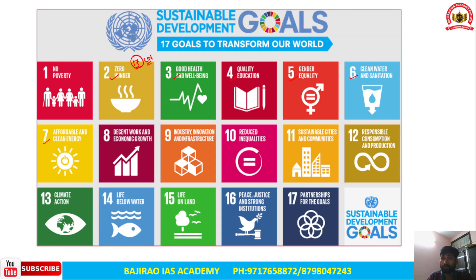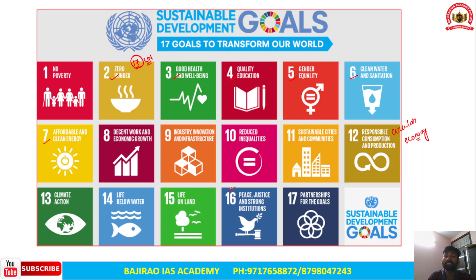Goal 12 is Responsible Consumption and Production, which involves the circular economy — minimizing waste and increasing scope for product reuse. Goal 13 is Climate Action; Goal 14 is Life Below Water; Goal 15 is Life on Land, covering wildlife, flora and fauna; Goal 16 is Peace, Justice and Strong Institutions to ensure all goals are achieved and peace is maintained globally.